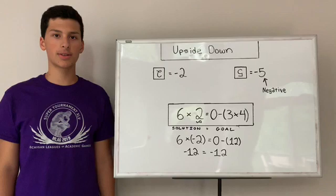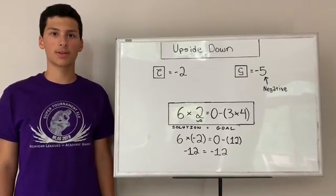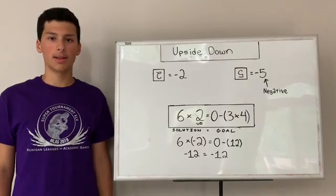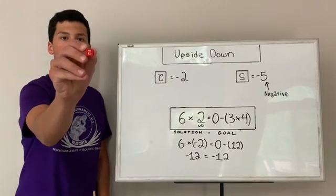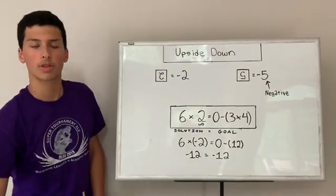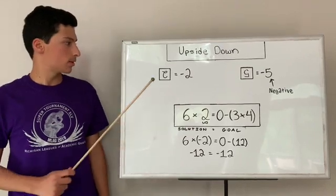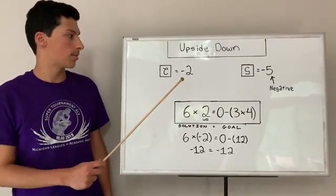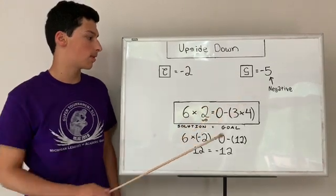The next variation is upside down. Upside down allows for players to turn non-zero cubes upside down, like this. Which allows for the cube to be its negative value. So, if you flip the 2 upside down, it would become negative 2. If you flip the 5 upside down, it would become negative 5, and so on.